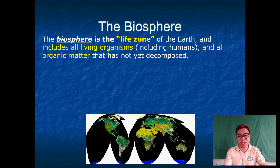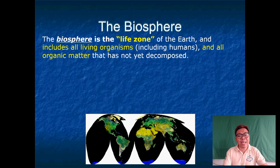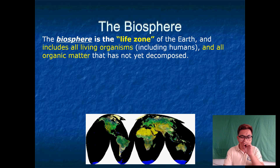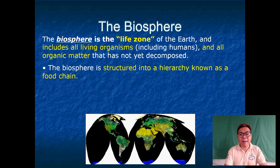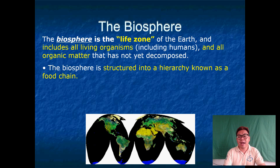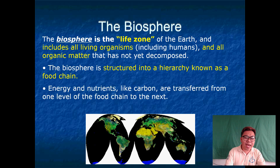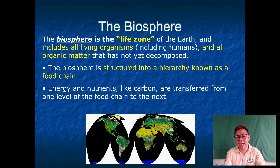Next, we have the biosphere. The biosphere is the live zone — the zone where there are purely biotic factors, meaning living things. It includes all living organisms, including humans, and all organic matter that has not yet decomposed. The biosphere is structured into a hierarchy known as the food chain — a series of eat-and-eating relationships from autotrophs or producers up to consumers and decomposers. Energy and nutrients like carbon are transferred from one level of the food chain to the next.